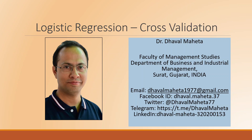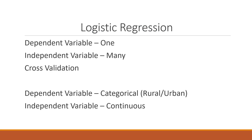Hello to all of you, this is Dr. Dhaval Mehta and today we will understand how to run cross validation in logistic regression. We know that we are using logistic regression when the dependent variable is categorical — for example, rural, urban, purchasers, non-purchasers, buyers, non-buyers — and the independent variable is continuous. There is one dependent variable and many independent variables.